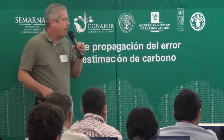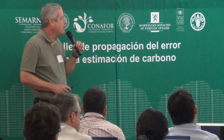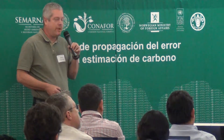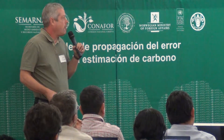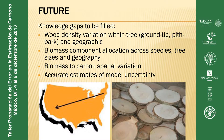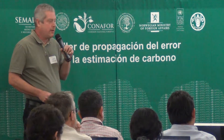Going forward, there are a number of knowledge gaps to fill. We want to know about wood density - how it varies within a tree from ground to top and from pith to bark, and how it varies spatially across the region. Biomass component allocation within a tree probably varies across species, tree sizes, and geography. Right now we use biomass times 0.5 equals carbon, which is not very scientific, so it would be much better to understand the biomass-to-carbon conversion. We also want to use modern statistical methods to get good estimates of the uncertainty associated with our models.